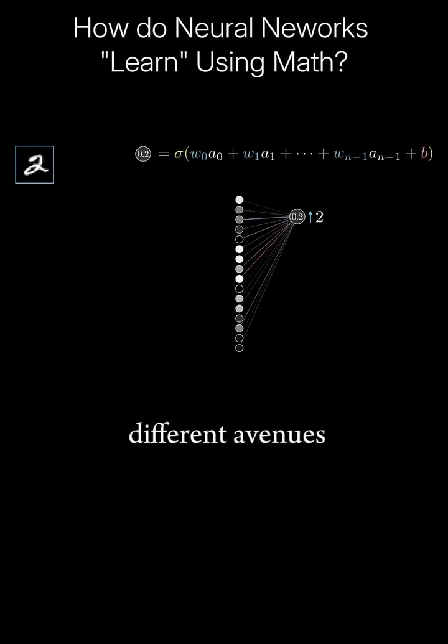There are three different avenues that can team up together to help increase that activation. You can increase the bias, you can increase the weights, and you can change the activations from the previous layer.